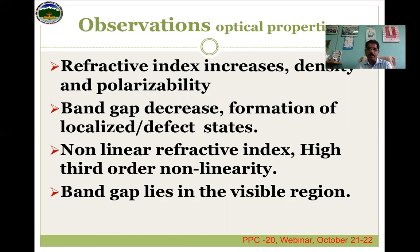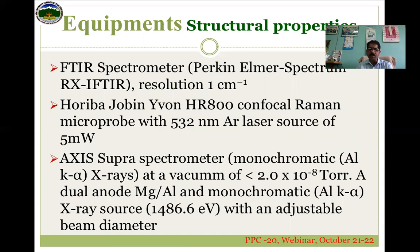The increase in refractive index has been ascribed to the increased polarizability and the increased density of the material — gallium addition makes the material more polarizable. The formation of localized defect states means that when we add gallium, it results in the formation of homopolar bonds and defect states, which results in a decrease in the band gap. The non-linear refractive index and the band gap lie in the visible region. In order to confirm these parameters, we performed structural analysis using FTIR, Raman, and XPS (X-ray photoelectron spectroscopy).